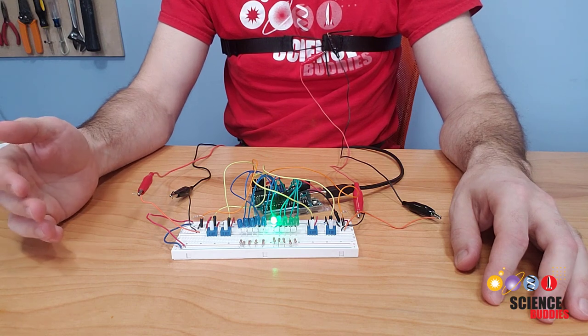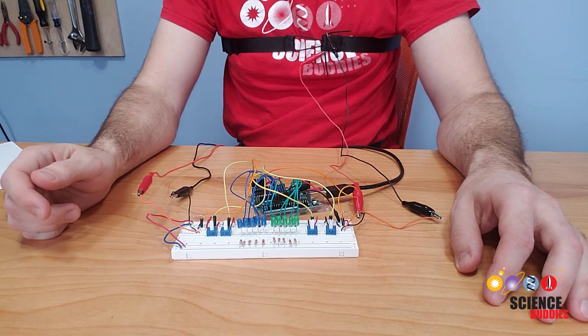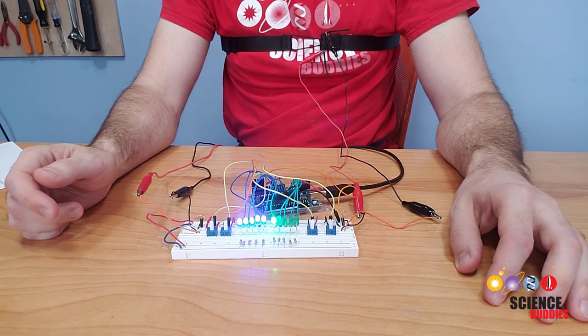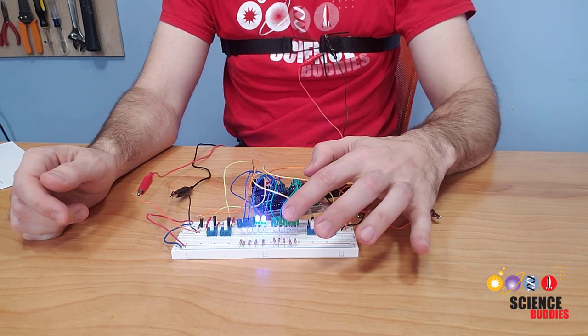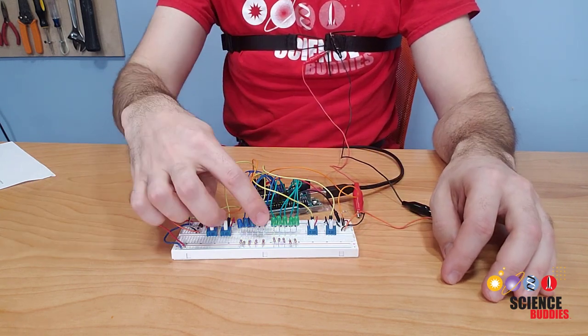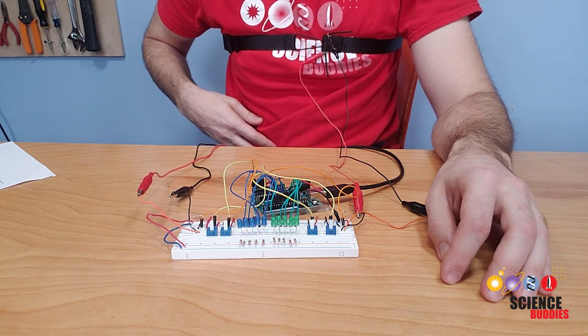Now, watch what happens when I take a deeper belly breath, which will cause the stomach sensor to stretch. You can see that I still lit up a few of the green LEDs, meaning the chest sensor still stretched a bit, but I also lit up all of the blue LEDs, indicating that I stretched the belly sensor as well.